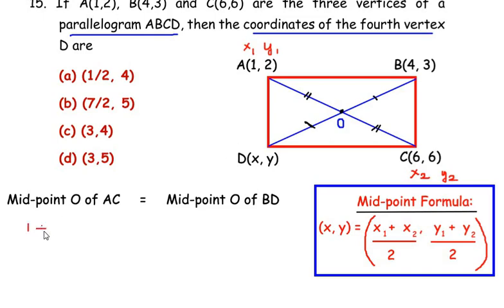So using the same formula I am going to find out the midpoint O of AC. So let me write here (1 + 6)/2. This is the x coordinate and for y we are going to write (2 + 6)/2. So this is the midpoint of AC and this is equal to midpoint of BD.